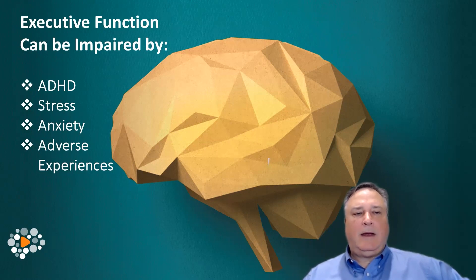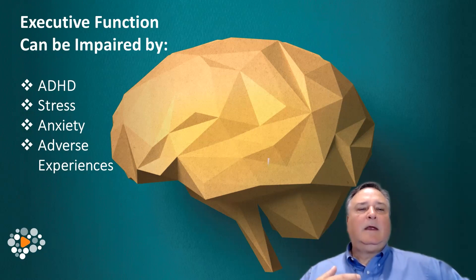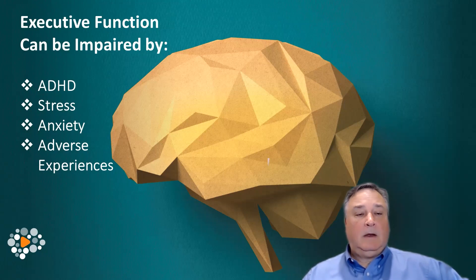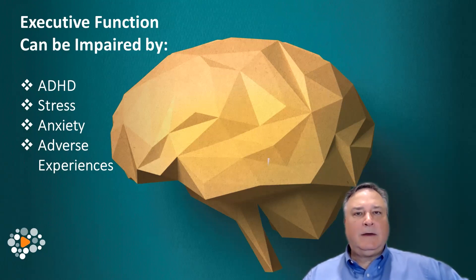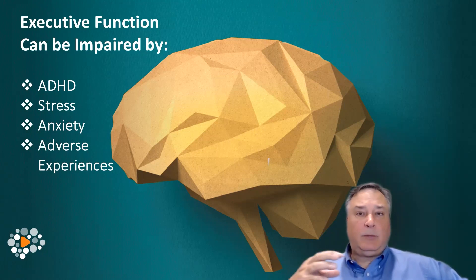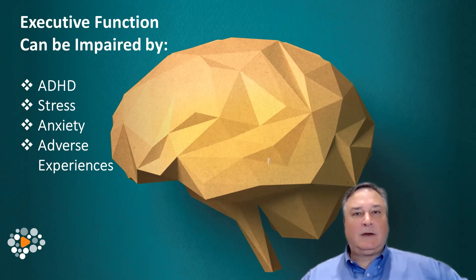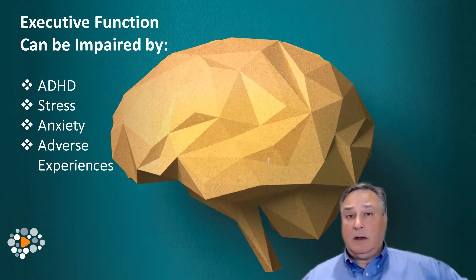Anxiety can also impair executive function a great deal. Adverse experiences and trauma in our lives can impair executive function as well. Many people who have experienced extreme, life-threatening circumstances carry it — their brain is reprogrammed and they have a very difficult time adjusting. Their executive functions are impaired long-term, though it doesn't mean they can't get them back.